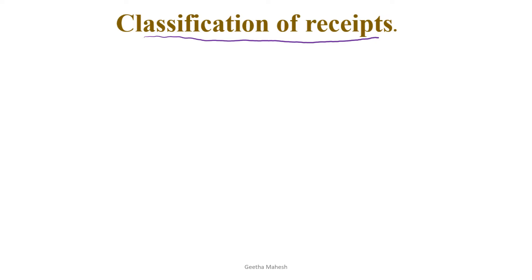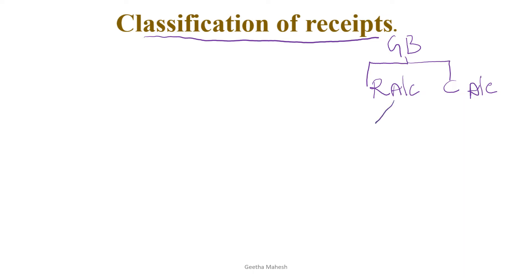Classification of receipts under government budget. Dear students, we all know that the government budget has two types of accounts: one is the revenue account and another one is the capital account. The revenue account is further divided into revenue receipts and revenue expenditure. Similarly, the capital account is divided into capital receipts and capital expenditure.